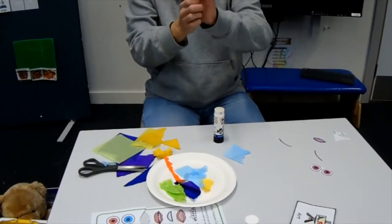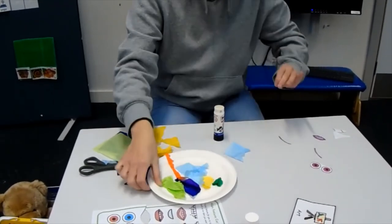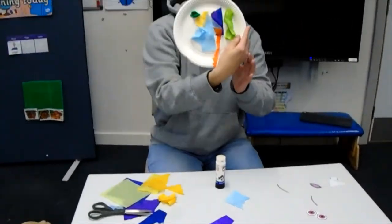And another green piece of paper here. Scrunch it up into a ball. There we go. There we go. My alien's body is very, very colourful.